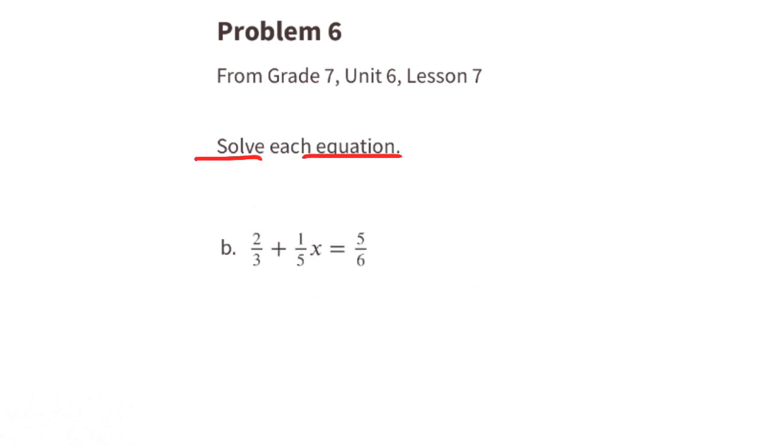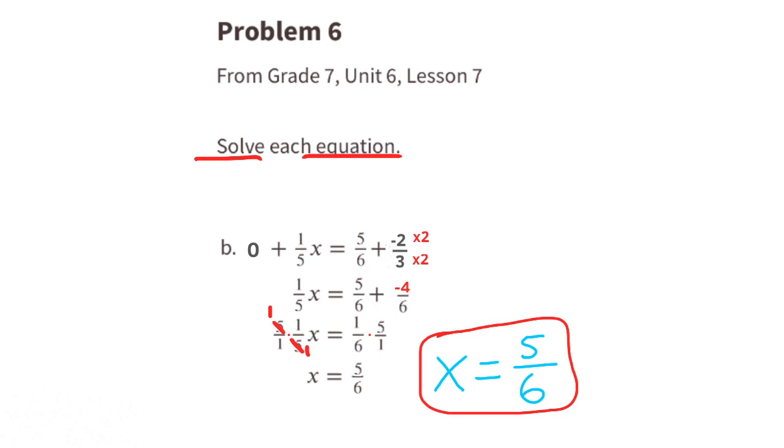B. Subtract 2 thirds from both sides of the equal sign. That leaves us with 1 fifth X equals 5 sixths minus 4 sixths. 5 sixths minus 4 sixths is 1 sixth. We can rewrite the equation as 1 fifth X equals 1 over 6. Multiply both sides of the equal sign by the reciprocal of 1 fifth, which is 5 over 1. And that leaves us with 1 X or X, and 1 sixth times 5 over 1 is 5 sixths. So X equals 5 over 6.